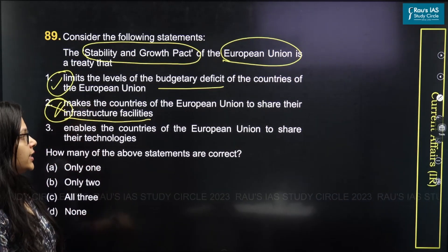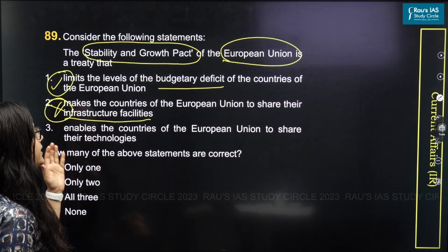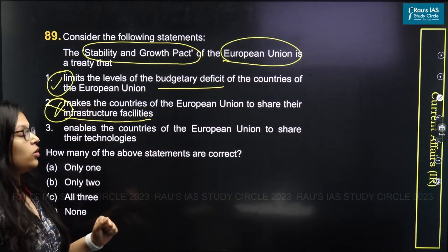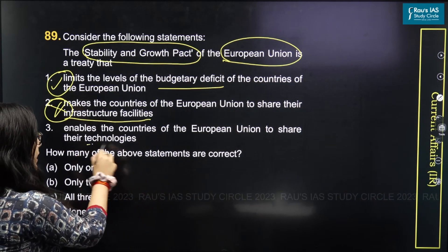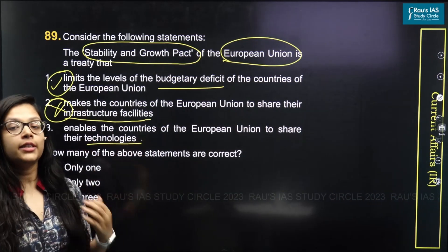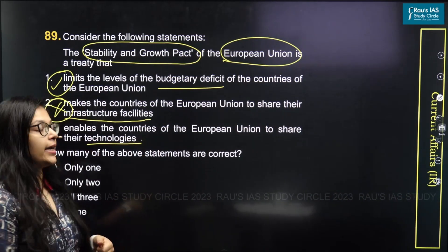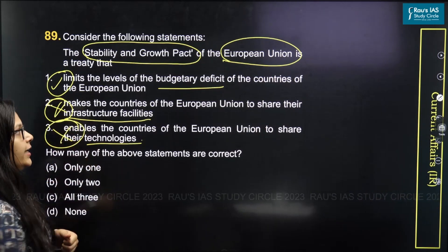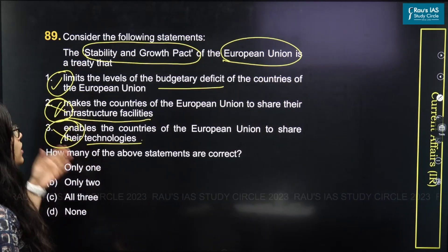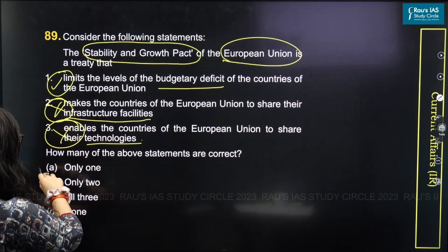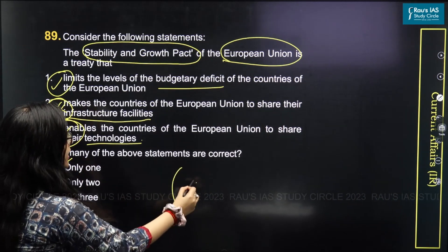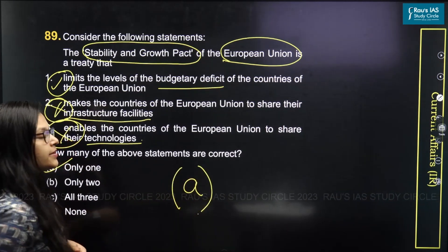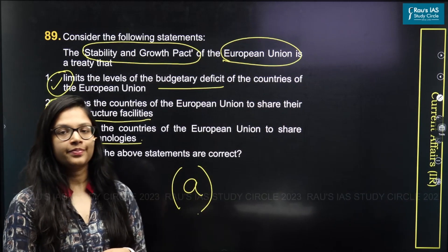Coming to the third statement, it states that it enables the countries of the EU to share their technologies. Again, there is no mention about the technological aspect in the pact, so the third statement also becomes incorrect. Coming to the answer of this question, only one statement is correct. Hence, the answer to this question becomes A. Thank you.